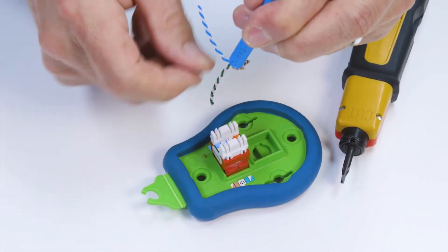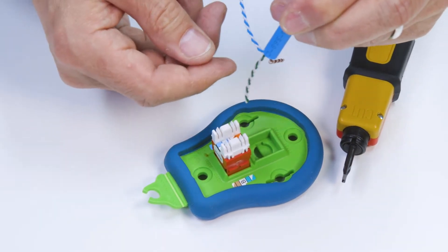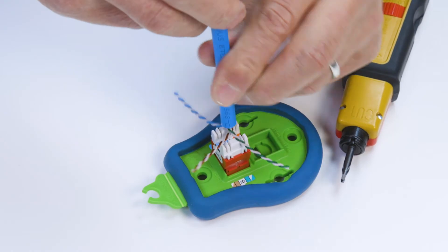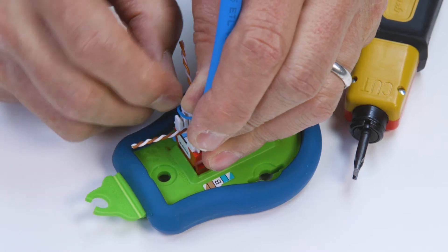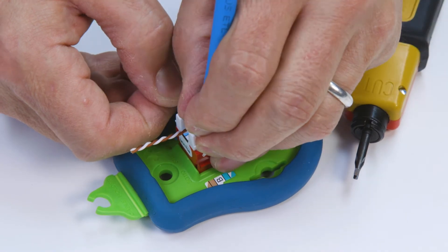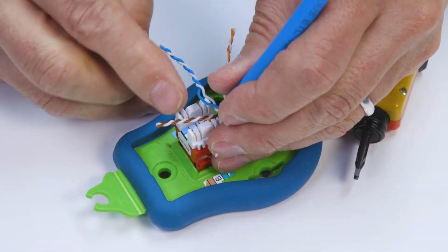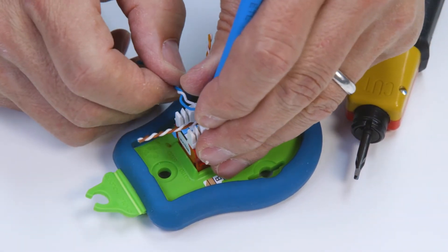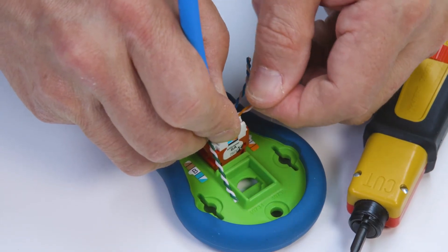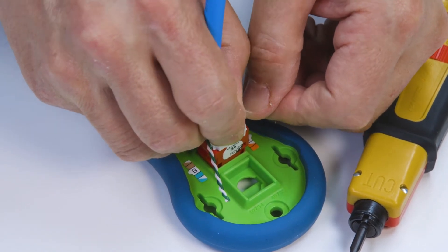With this jack, all four pairs can be slotted before punching them down. Align the pairs to correspond with the colors on the wiring label. Paying attention to polarity, slightly untwist the pair and use the pair separation tower on the jack to help separate the wires while pushing them down into the slot. Repeat this process until all wires are slotted in the jack.